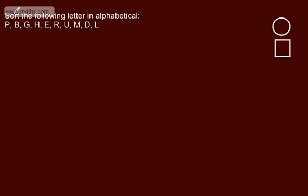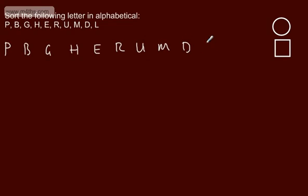Let's have a go at another one. We're asked to sort the following letters in alphabetical order. Let's write them across the screen: P, B, G, H, E, R, U, M, D, and L. So we want these in alphabetical order. Just be careful with this, because it's quite straightforward to make a mistake.